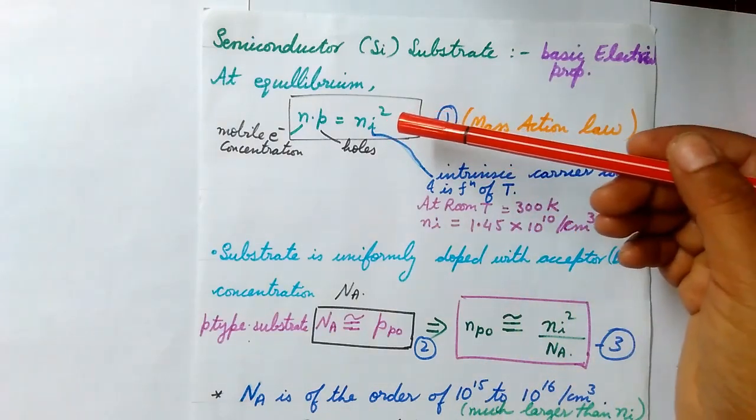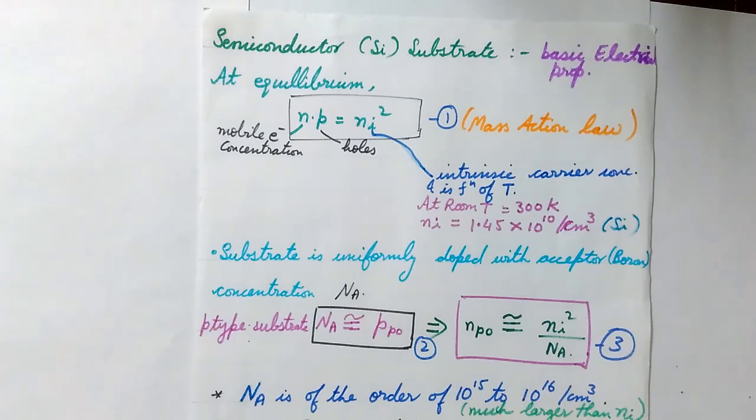Now this intrinsic carrier concentration is a function of temperature. At room temperature, that is at 300 Kelvin, its value is 1.45 × 10^10 per centimeter cube for silicon.